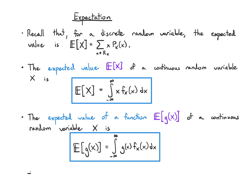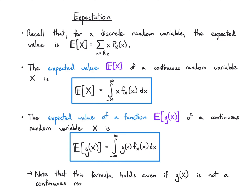One technical point: this formula actually works even if g(x) is not continuous. So if we had a continuous random variable and a function g(x) that ended up being discrete, that can happen — we can still use this formula.